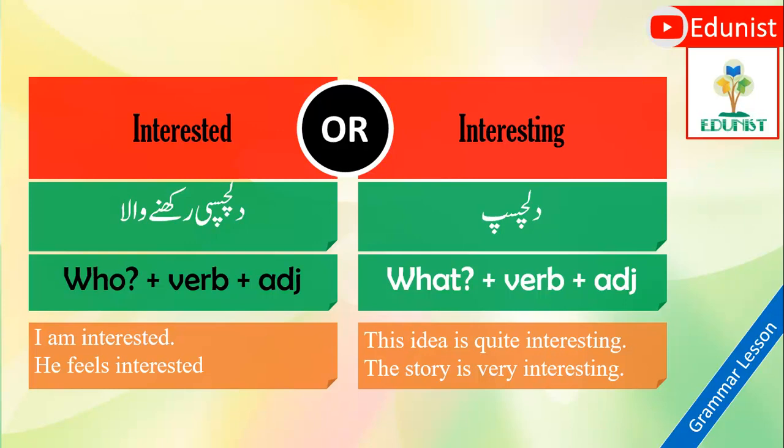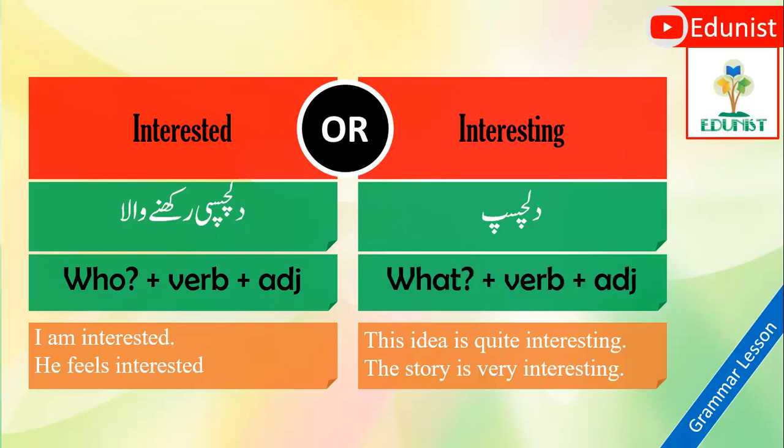The -ing form is used for things and situations. For example, if you have an idea: 'This idea is quite interesting.' 'The story is very interesting.' 'The movie is quite interesting.' 'The journey is quite interesting and amusing.' But we will never say 'The idea is quite interested' — that is totally wrong. We also will never say 'I am interesting.'